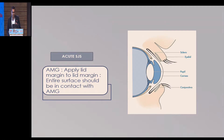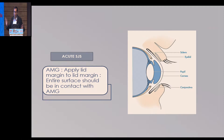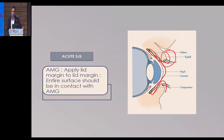Next is acute Stevens-Johnson syndrome — a very important application of AMG. In acute SJS, you must wrap the lid margin with amniotic membrane: start from the lid margin, go into the fornix, cover the whole surface, come onto the tarsus, and then back onto the lid margin again. If required, you can put a fornix suture or apply a symblepharon ring. This procedure is very important to reduce long-term ocular morbidity.